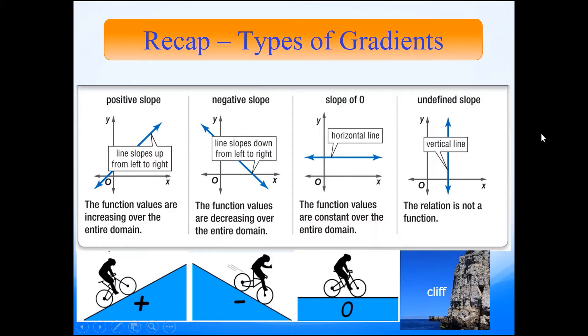Here's a quick recap on types of gradients. There are four types of slopes: positive slope is going uphill, negative slope is going downhill, horizontal line will have a gradient of zero, and a vertical line will have a gradient that's undefined in mathematics.